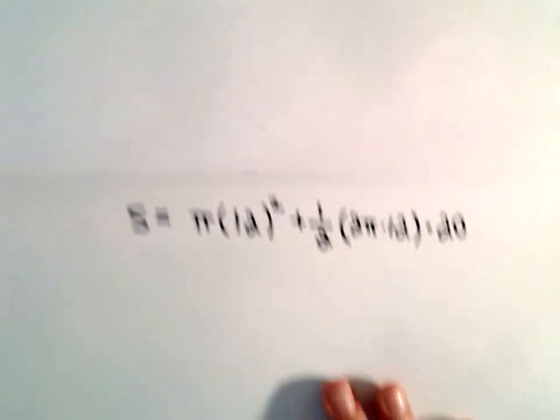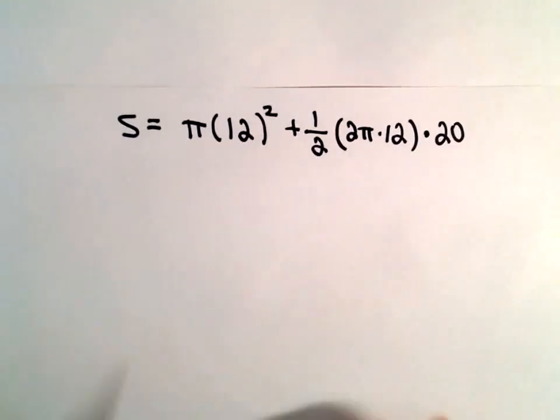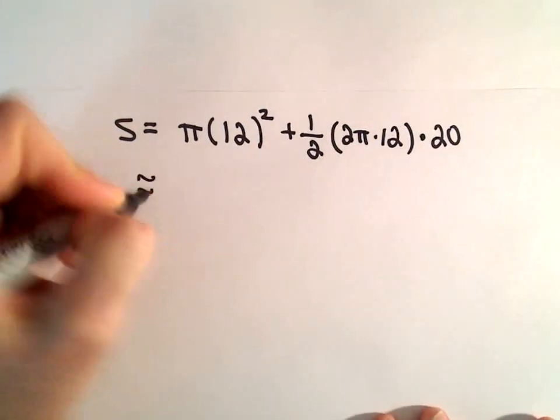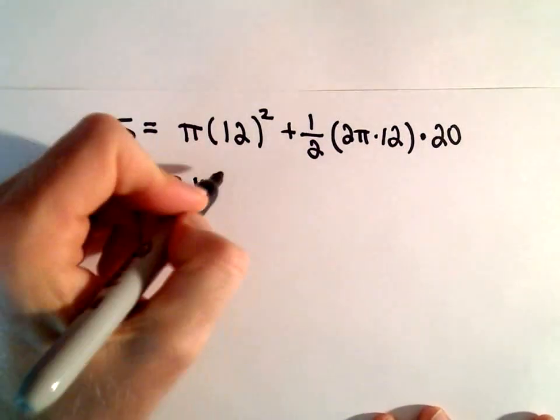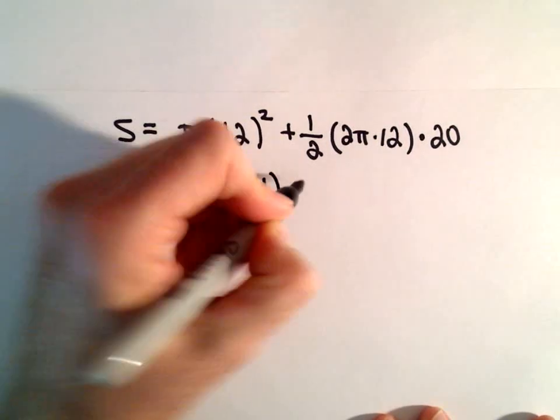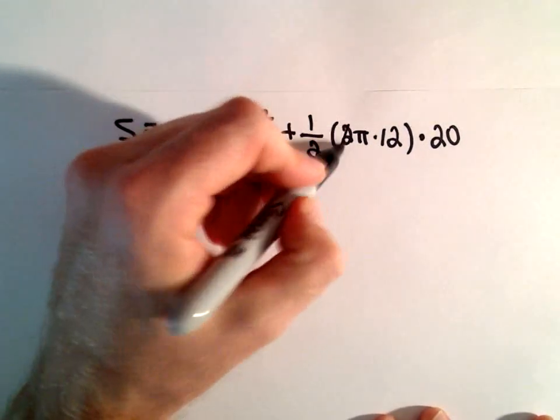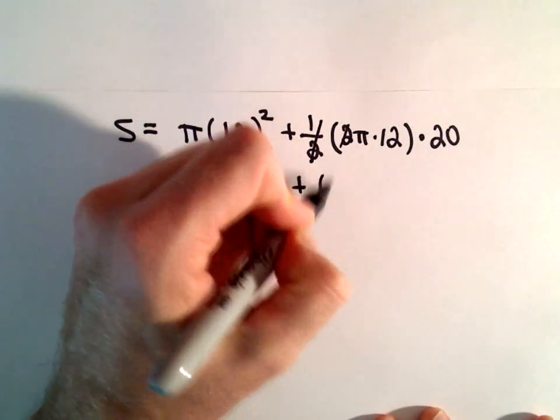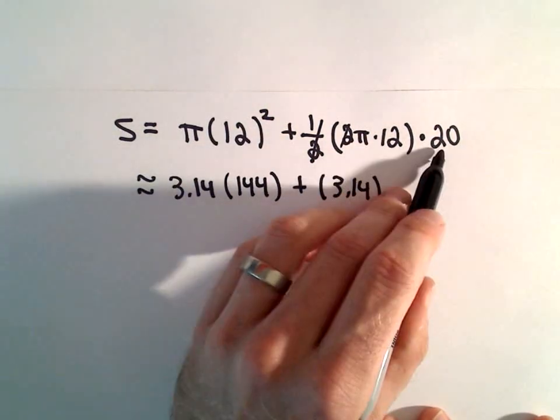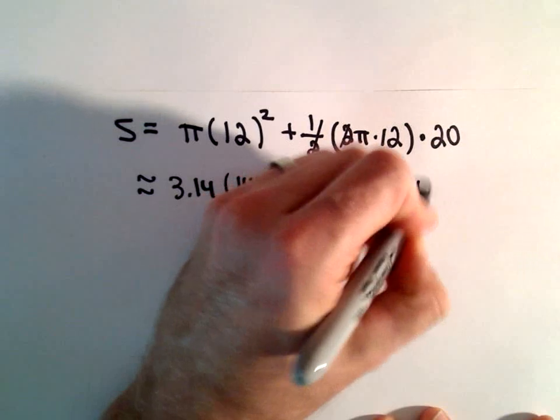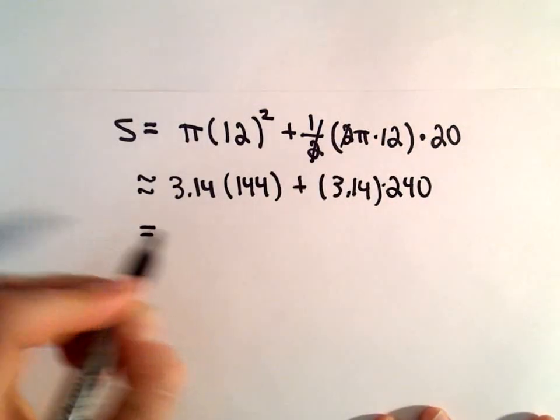So now I'm going to just approximate. I'm going to let pi be 3.14. 12 squared is simply going to be 144. One-half times 2 is 1. Again, pi is 3.14. 12 times 20 is 240.